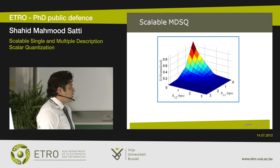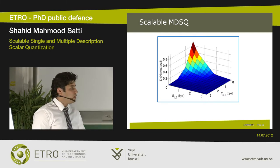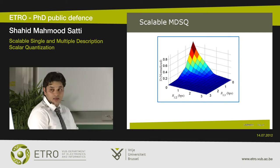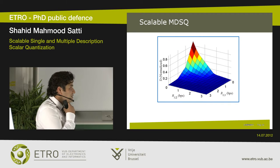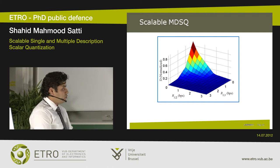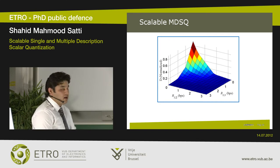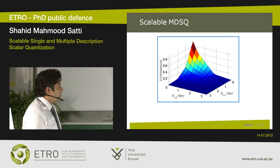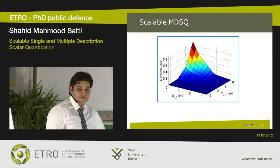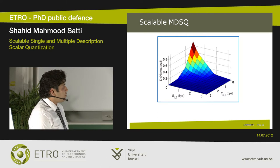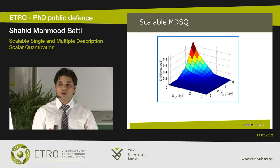Since the descriptions can now be received at different amounts of rate, the scalable MDSQ has a rate-distortion function that is actually a rate-distortion surface, as I've shown here. The problem with existing designs is that the scalable MDSQs in the literature don't produce a perfectly symmetric source rate-distortion surface. Symmetric means the behavior on one side is not exactly the same as on the other side, and this creates problems because such a distortion-rate surface only leads to a suboptimal transmission design.